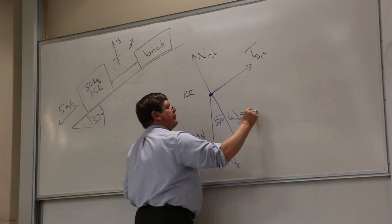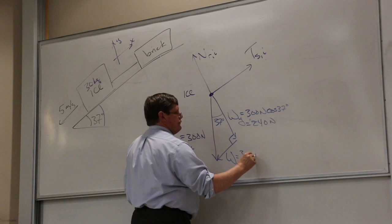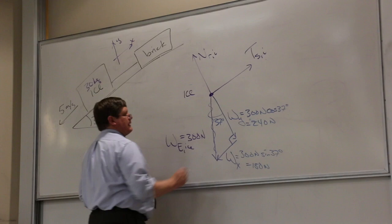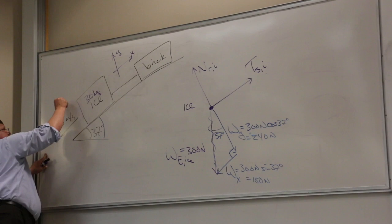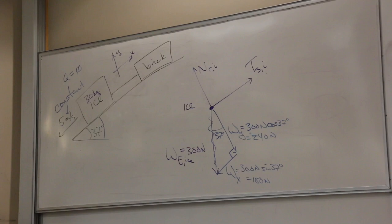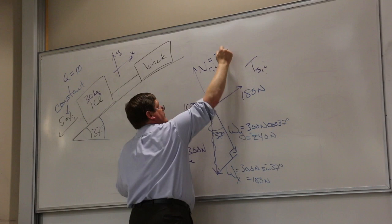The y-component of weight is 300 newtons times cosine 37 degrees, or 240 newtons. The x-component is 300 newtons times sine 37 degrees, or 180 newtons. Once I've broken up that weight into components, I throw away the original. Since the speed is a constant 5 meters per second, acceleration is zero for both the ice and the brick. So the tension force must be 180 newtons and the normal force must be 240 newtons.